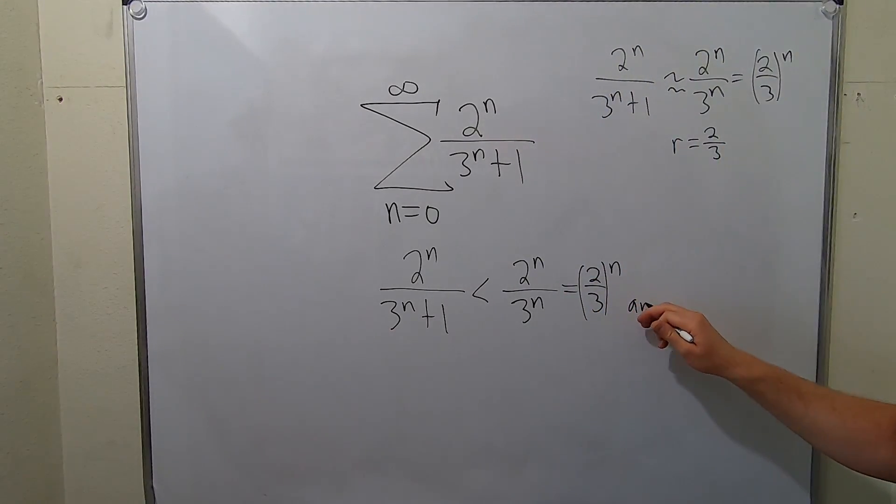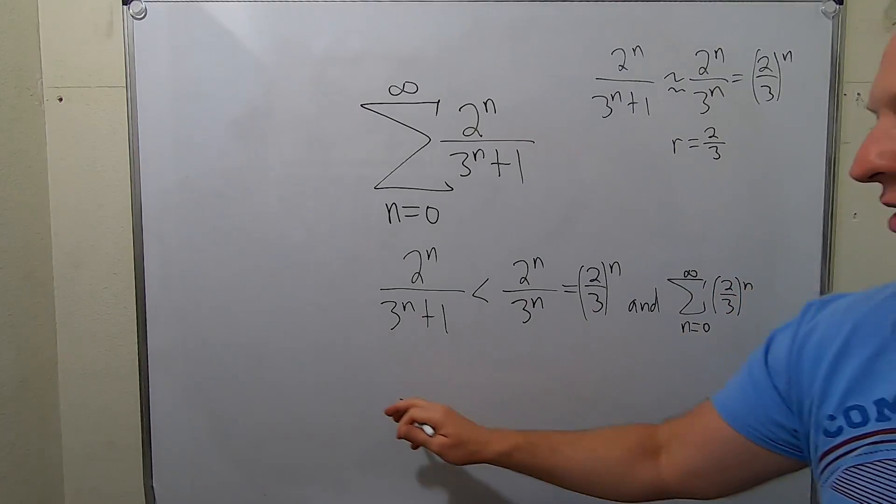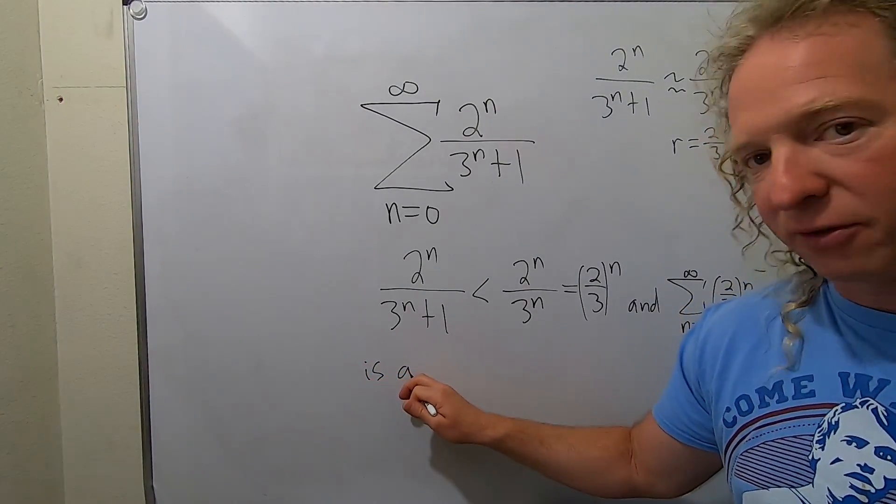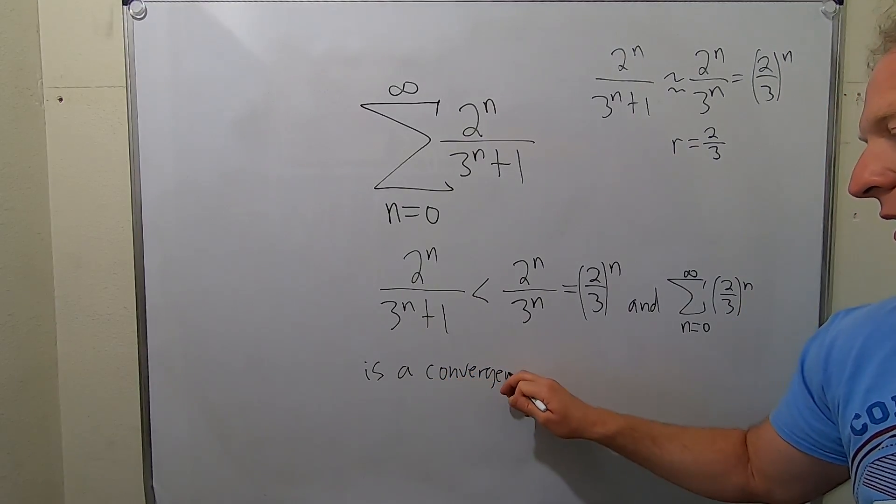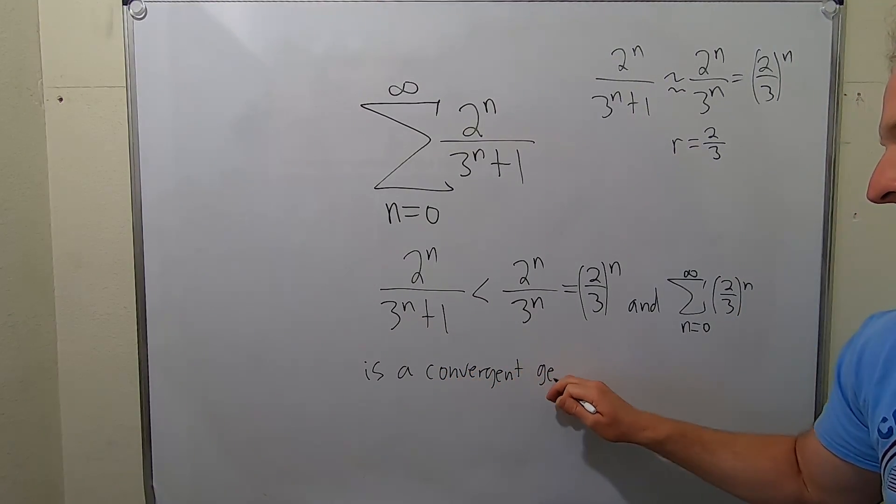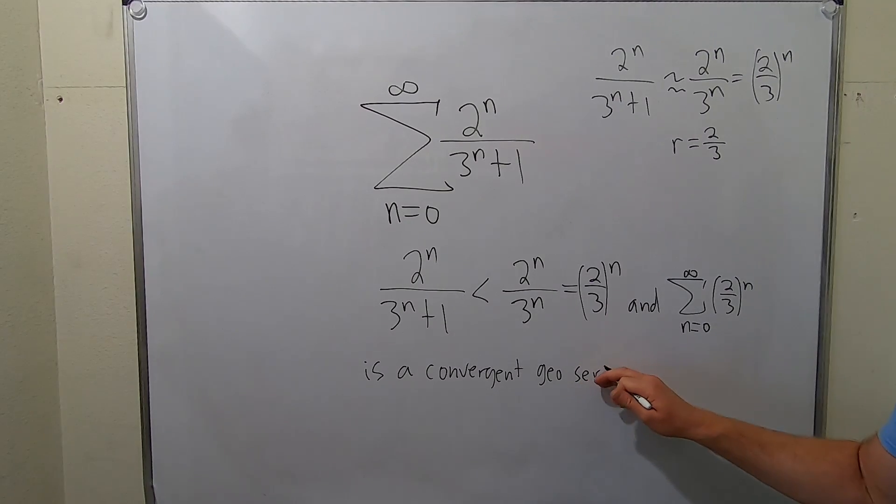So, if we take the sum as n runs from 0 to infinity of 2 thirds to the n, this is a convergent geo series since,